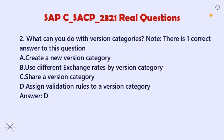Question 2: What can you do with version categories? Note: There is one correct answer. A. Create a new version category. B. Use different exchange rates by version category. C. Share a version category. D. Assign validation rules to a version category. Answer: D.